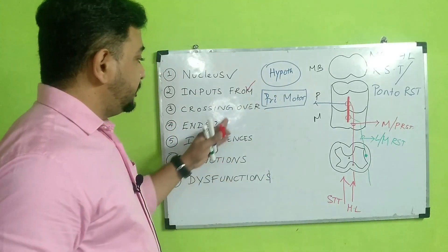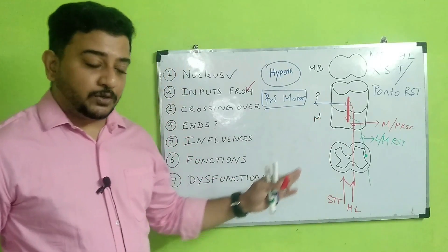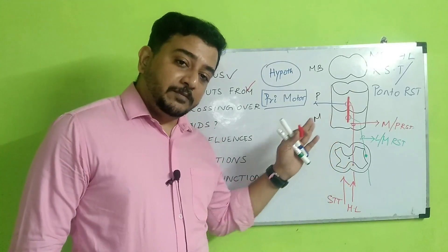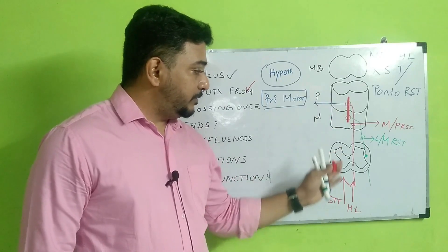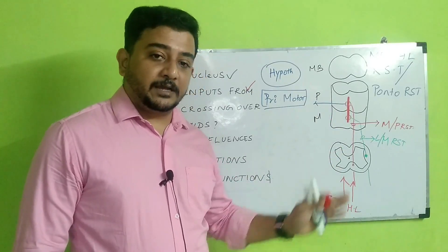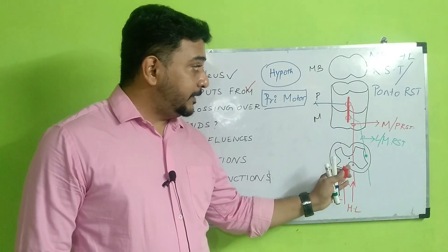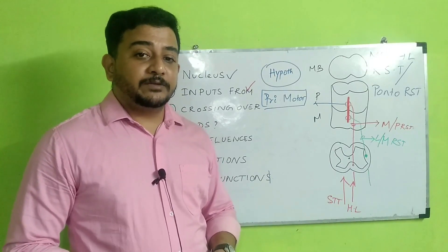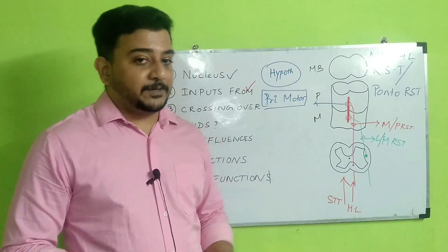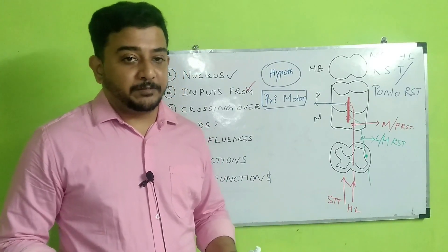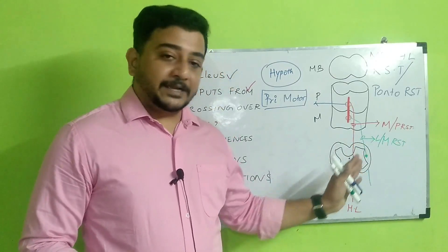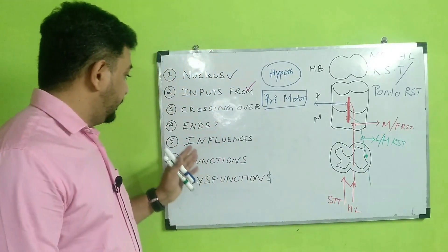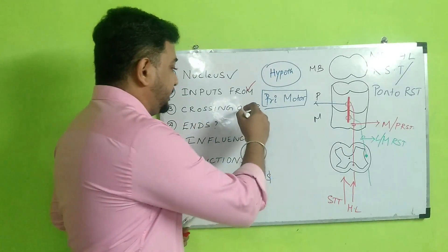Regarding crossing over — the reticulospinal tract does not significantly cross over. Research says there is minimal crossing over for the pontine reticulospinal tract, but the amount is very minimal. Both tracts go on to control the ipsilateral side.